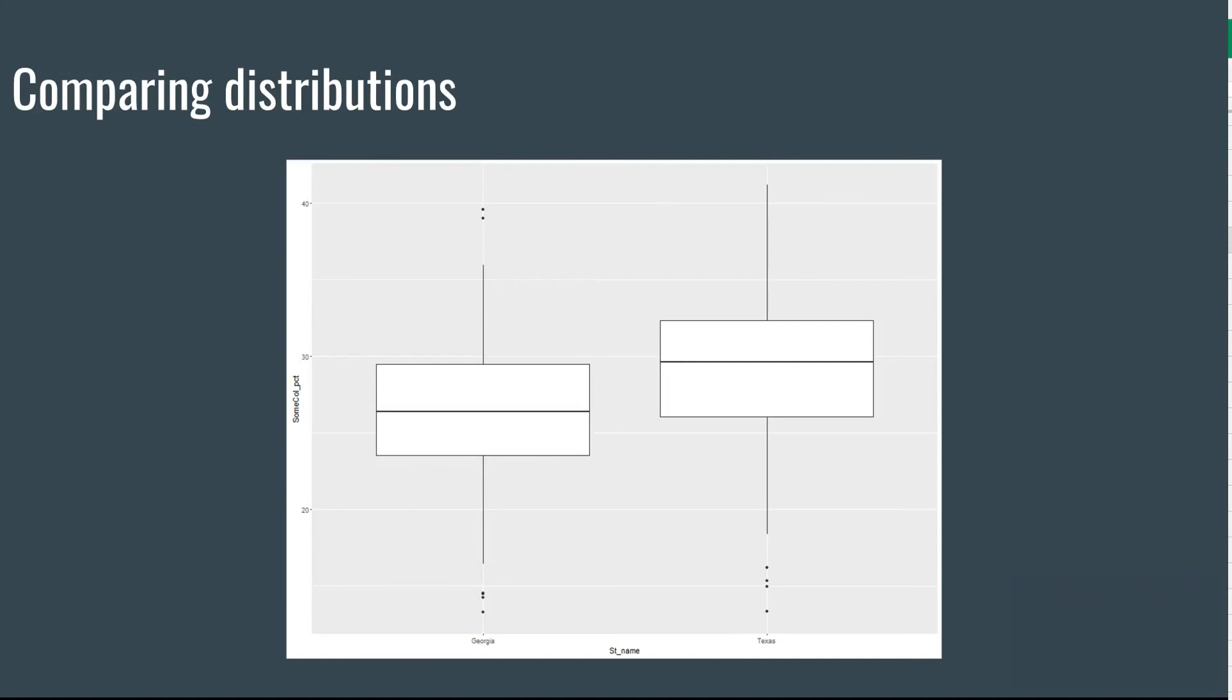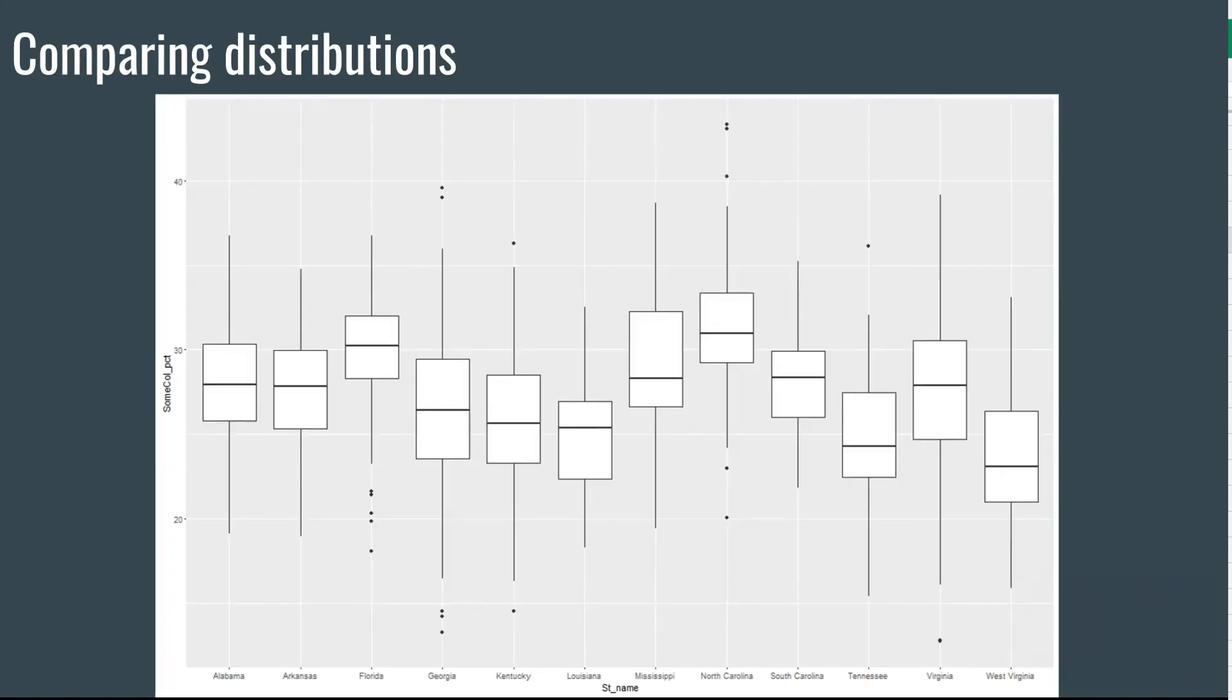Histograms allow you to kind of do that. But box plots are a little bit more effective, I would argue. Here, if you look at the same data, you can see the median for Texas is noticeably higher. You can even do this with all the states in the southeast. Now we can really look at this and see lots of data on every county in the southeast for this one variable.